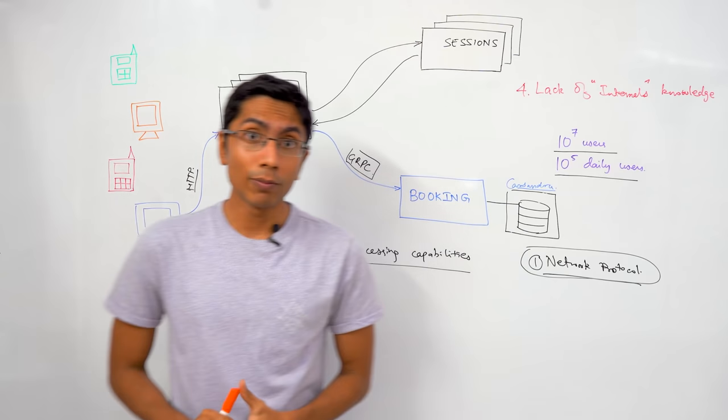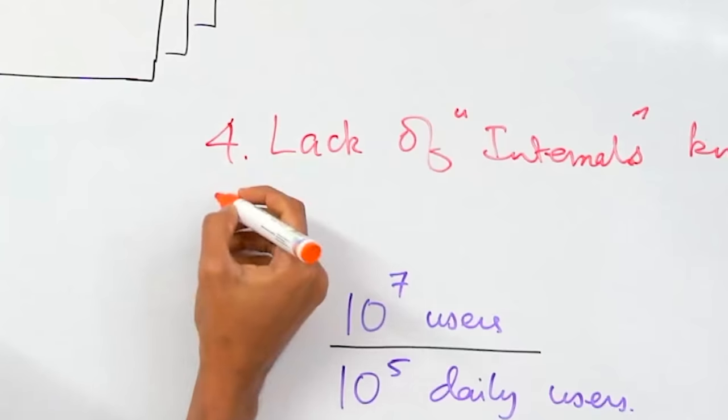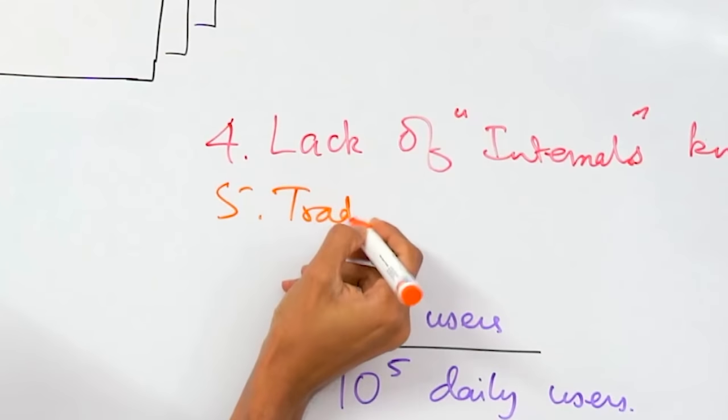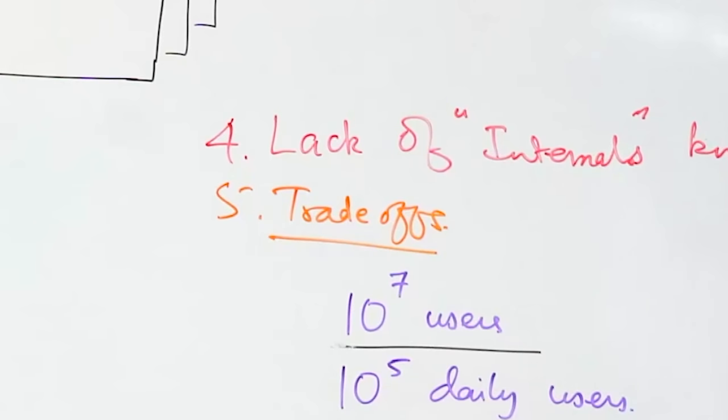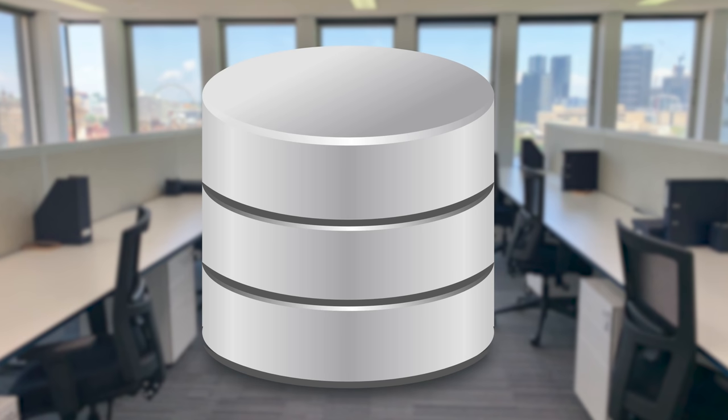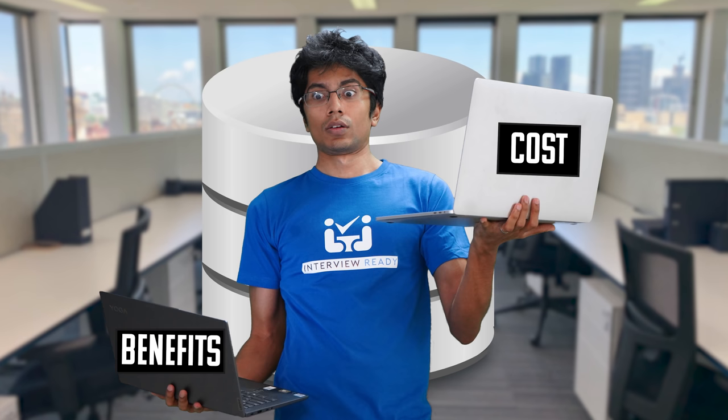The fifth and final point is trade-offs. A lot of people talk about what is this system doing instead of what are the things that we are losing out on or what are the things that we could possibly do better. Trade-offs comes from having a deep knowledge of how the systems work. What are the possible cons and pros of that solution?